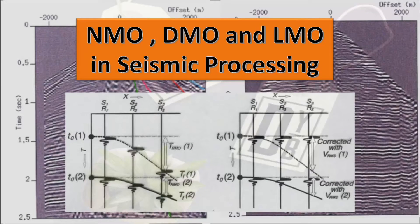Hello and good day to all of you. In this video lecture we are going to learn about NMO, which is normal move out, DMO which is dip move out, and LMO which is linear move out — the corrections applied to seismic data processing. There is a lot of confusion around NMO, DMO, and LMO: when to apply them, how to apply them, and what their effects are.